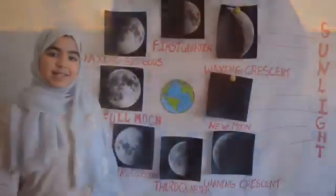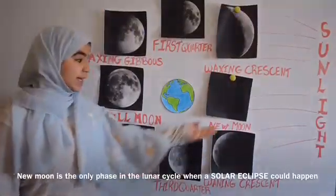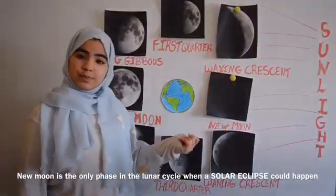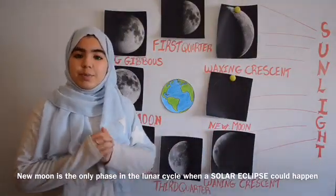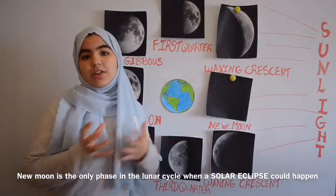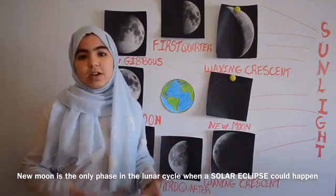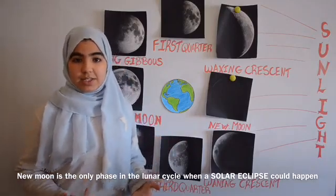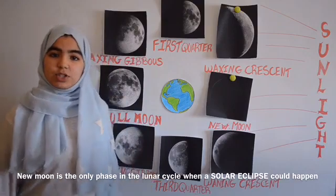Because the moon is a sphere and it orbits around the earth, the way we see it changes with time, and that's what causes its phases. The cycle of lunar phases begins with new moon. At new moon, the moon appears completely dark because it's between the earth and the sun, so we end up facing the side of it that's in full shadow.